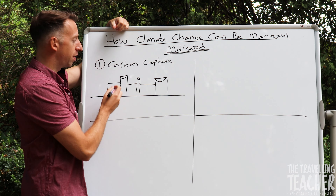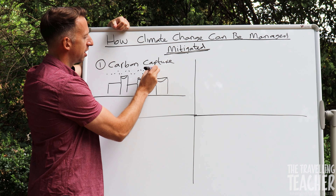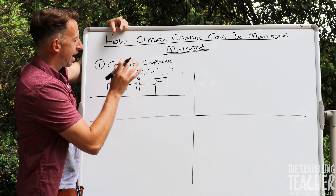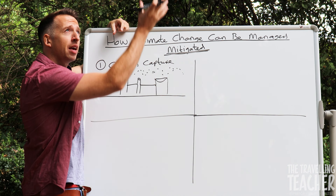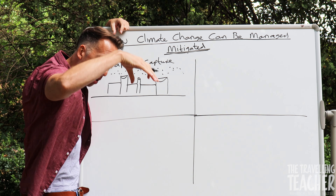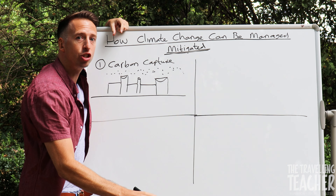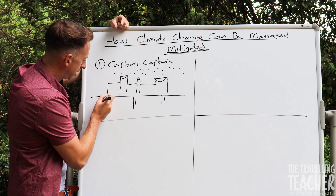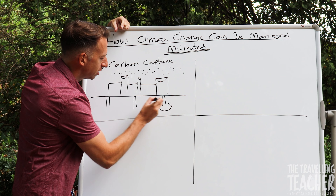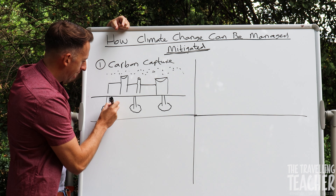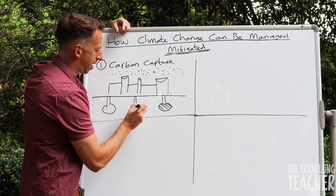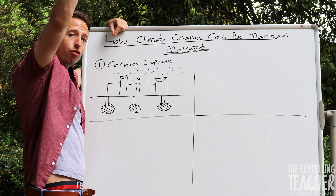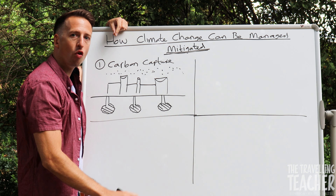As we know, in the atmosphere we have carbon dioxide — just floating around in our atmosphere. Carbon capture is when the carbon in the atmosphere is pumped out of the atmosphere and pumped deep underground into the underlying rock, where that carbon is then stored. So carbon capture: take from the atmosphere, pump deep underground, and store it underground.